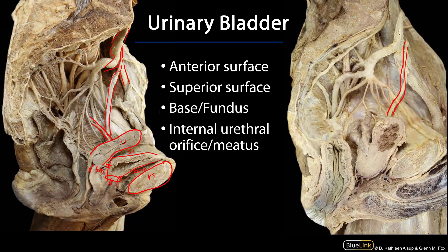Over here we can see this would be the fundus or base of the bladder, this would be the superior surface, and this would be the anterior surface. It's difficult to appreciate the internal urethral orifice here because it looks like this bladder was sectioned a little to the left of the midline, so it would be located approximately there.